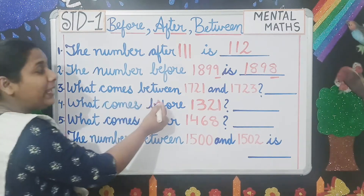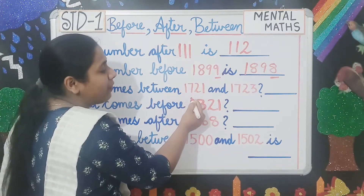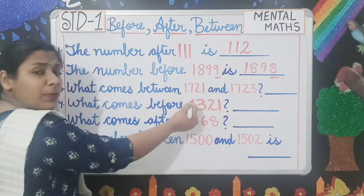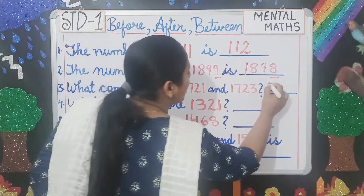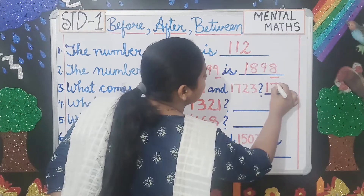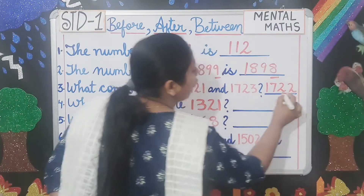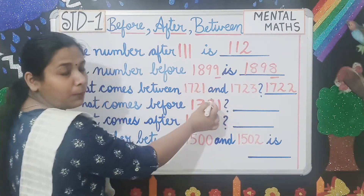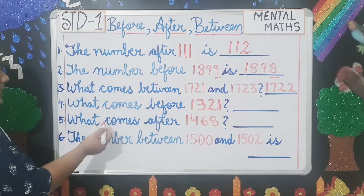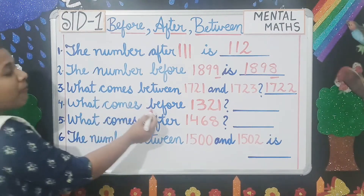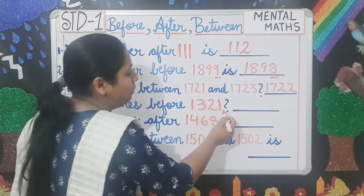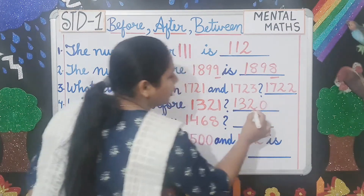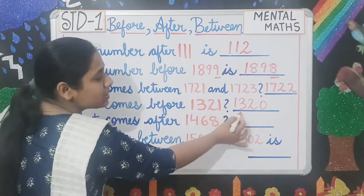What comes between 1721 and 1723? So between 21 and 23, it will be 22 — so 1722. For writing the between number, count one forward after the first number. Next, what comes before 1321? You do backward counting, so this gives you 1320, because before 21 comes 20.